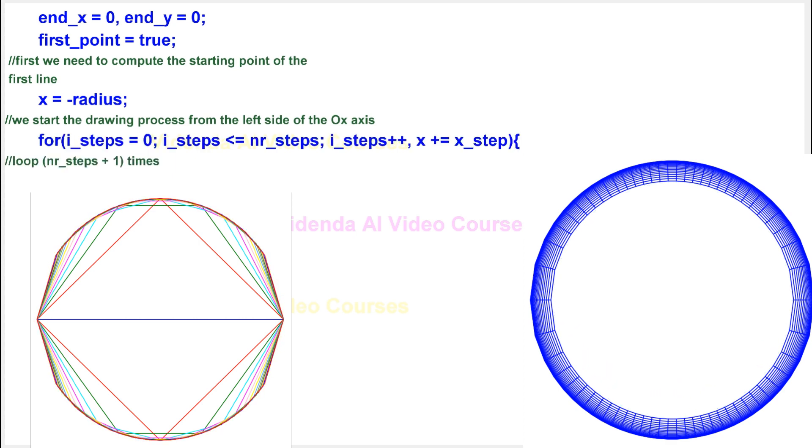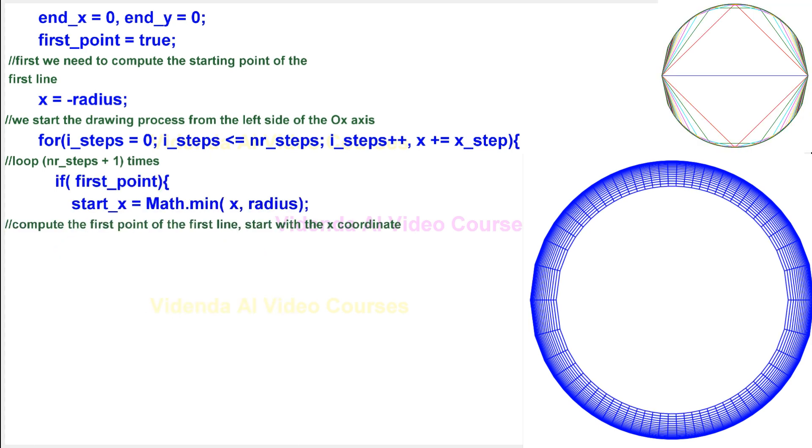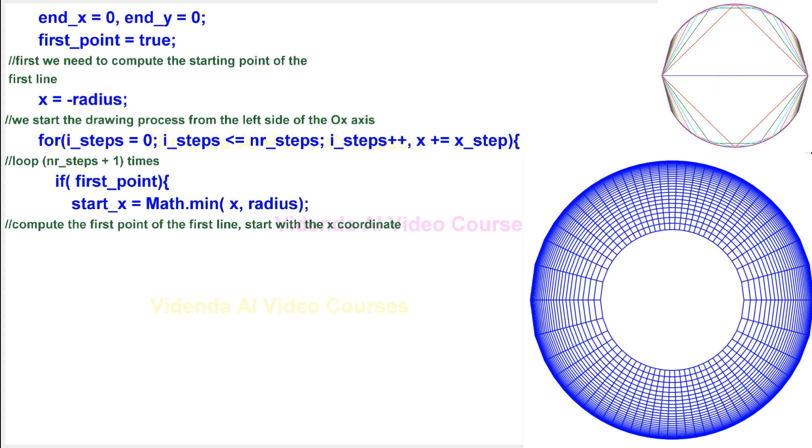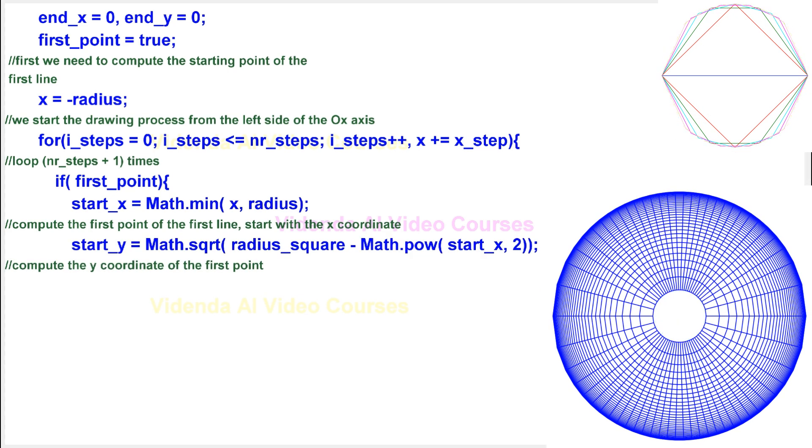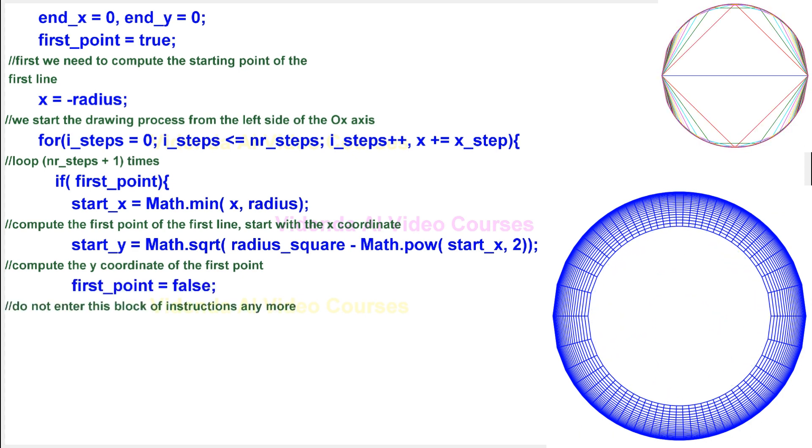Loop NR underscore steps plus 1 times. Compute the first point of the first line. Start with the x-coordinate. Compute the y-coordinate of the first point. Do not enter this block of instructions anymore.